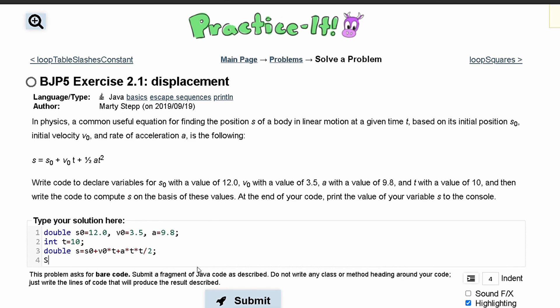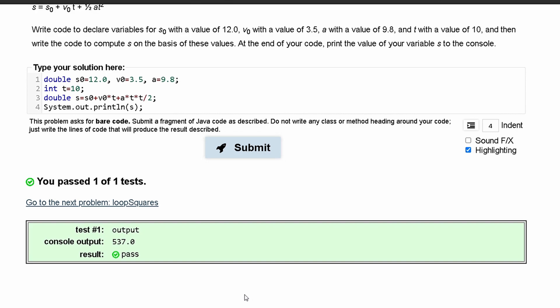And that line, and then system.out.println. Inside of here we can just print out s. If we submit this, we have passed the test.